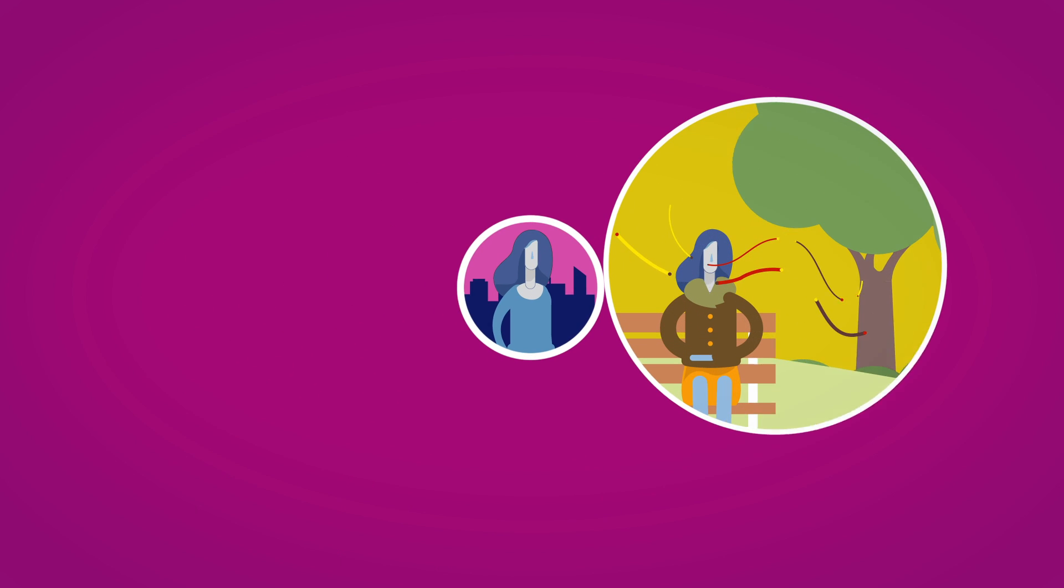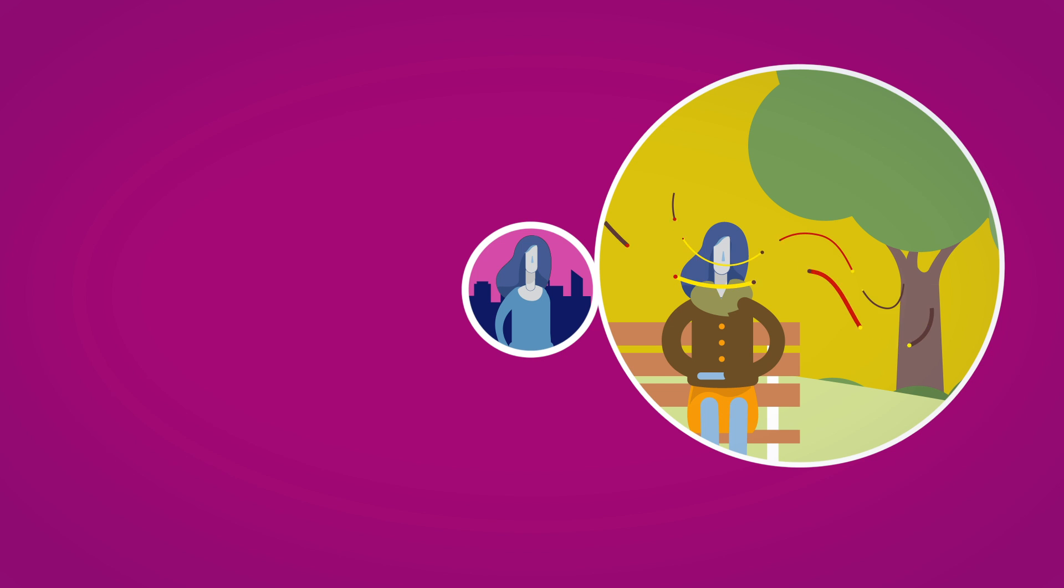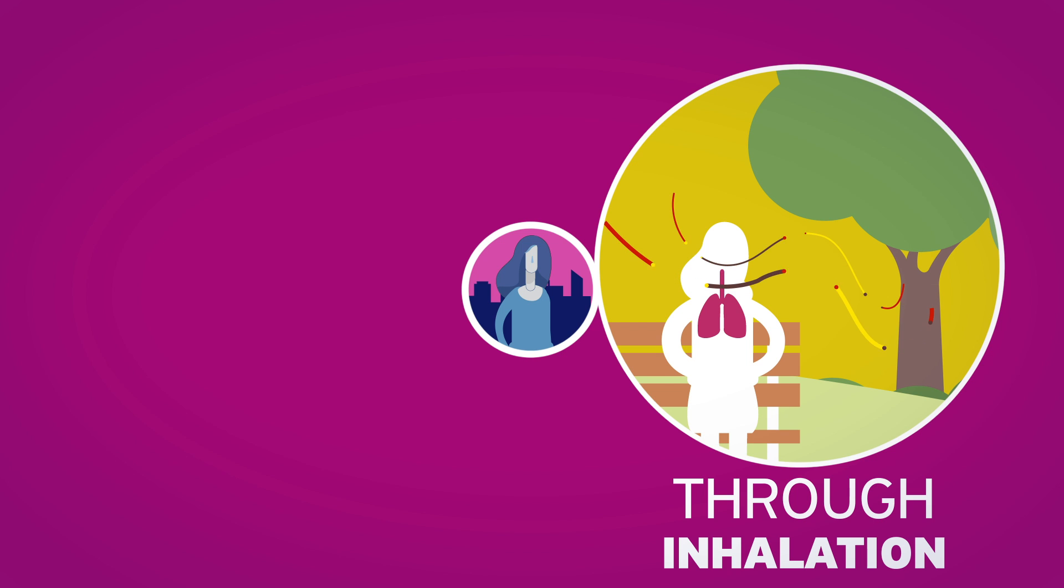For example, in tree pollen allergy, some foods contain molecules which look similar to those in pollen. Your immune system can mistakenly identify them as a threat and from now on also reacts to these foods.